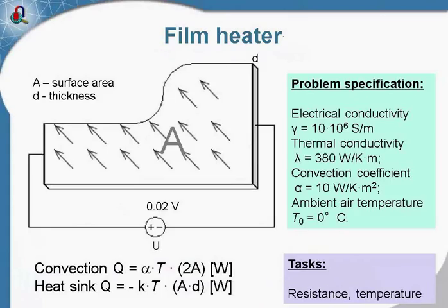This is the thin conducting plate used as the electric heater. The electric current flowing in the conductor causes electrical losses, and the losses cause the heating of the conductor. Our task here is to calculate the temperature distribution in this plate.